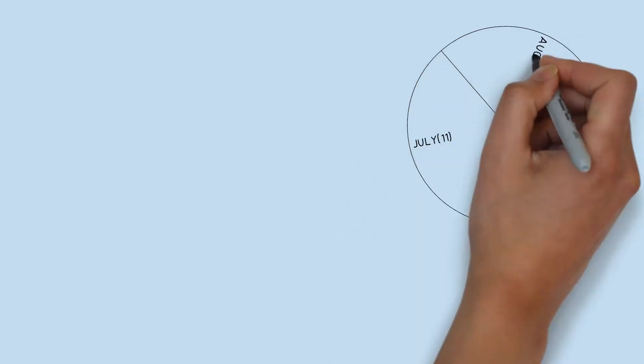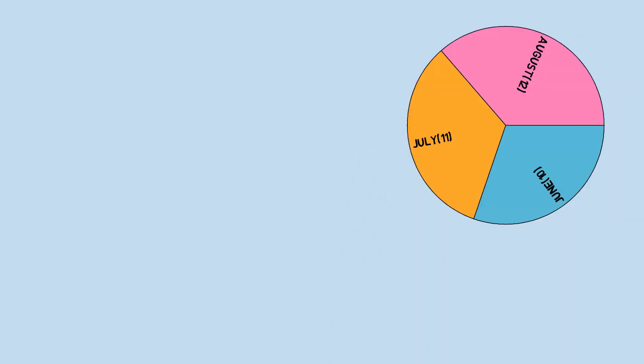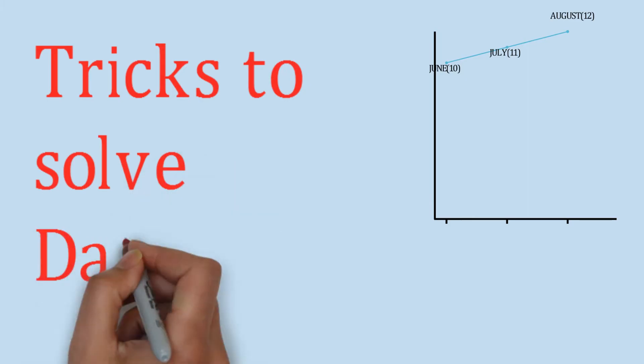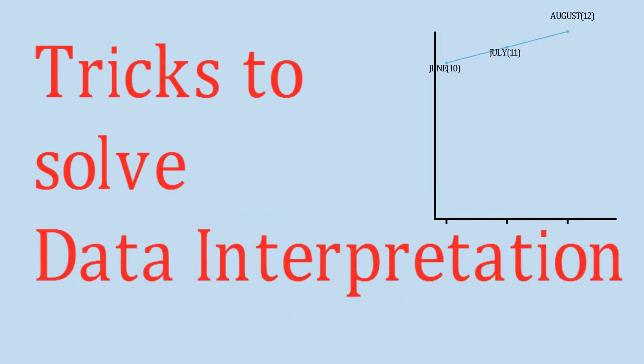Data, as we know, is a collection of useful information and it can be represented in various ways — like in the form of a pie chart, in the form of a bar graph, or in the form of a simple line graph. So what is the actual importance of the representation of this data?